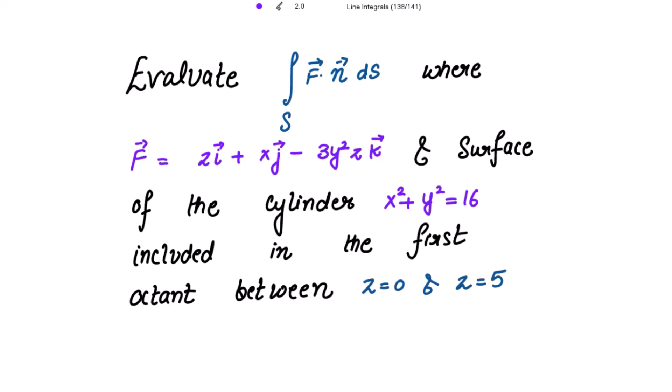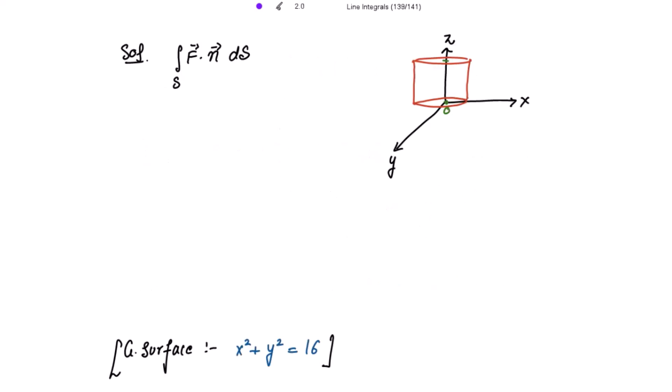We need to evaluate the surface integral of the dot product of F vector with n vector dS, where F vector is given and the surface of the cylinder is x² + y² = 16, included in the first octant between z = 0 and z = 5. The cylinder has a range of z from 0 to 5, with x-axis, y-axis, and z-axis, and the surface S is included in the first octant, that is in the xz-plane.